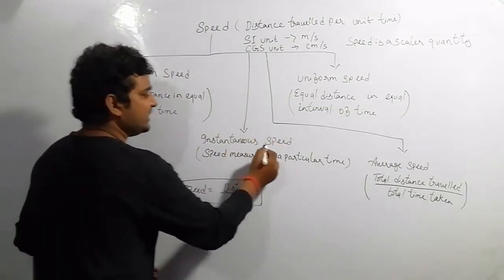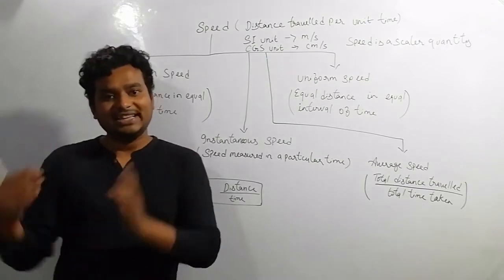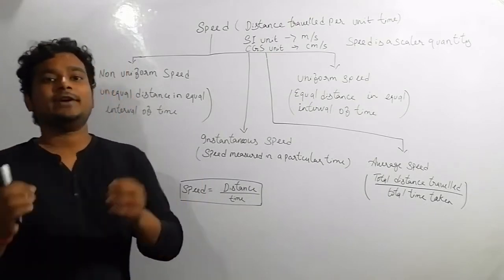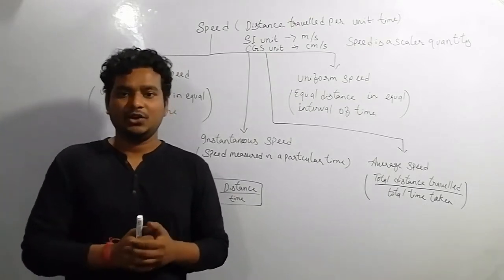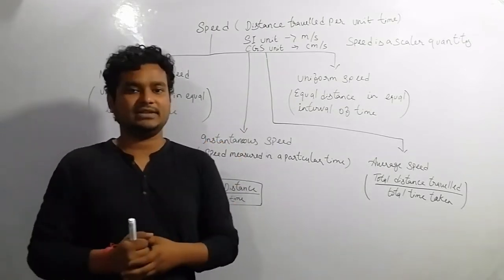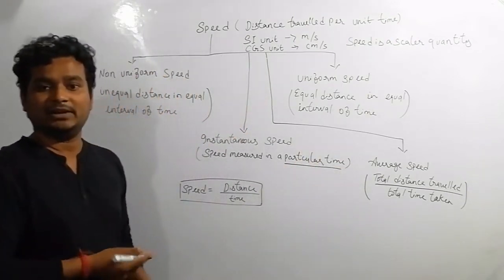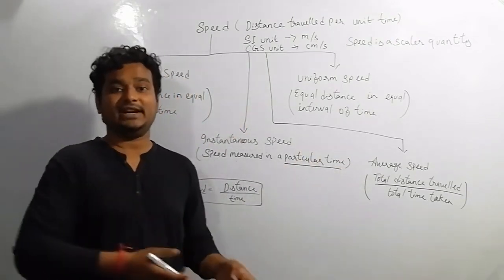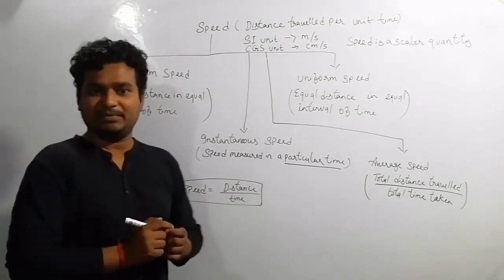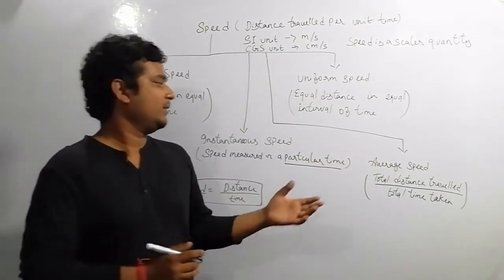Next is instantaneous speed. Instantaneous speed is the speed at any particular instant. For example, when traveling from one place to Jamshedpur, at every particular time interval we have different speeds. That particular speed at any specific time — which can be 5 seconds, 10 seconds, 1 minute, or 2 minutes — is called instantaneous speed.